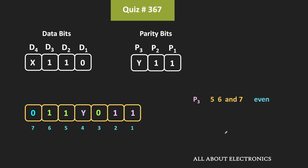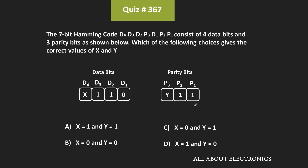That means for the given 7-bit Hamming code, the value of X and the value of Y should both be equal to 0. And hence, for the given question, option B is the correct answer.